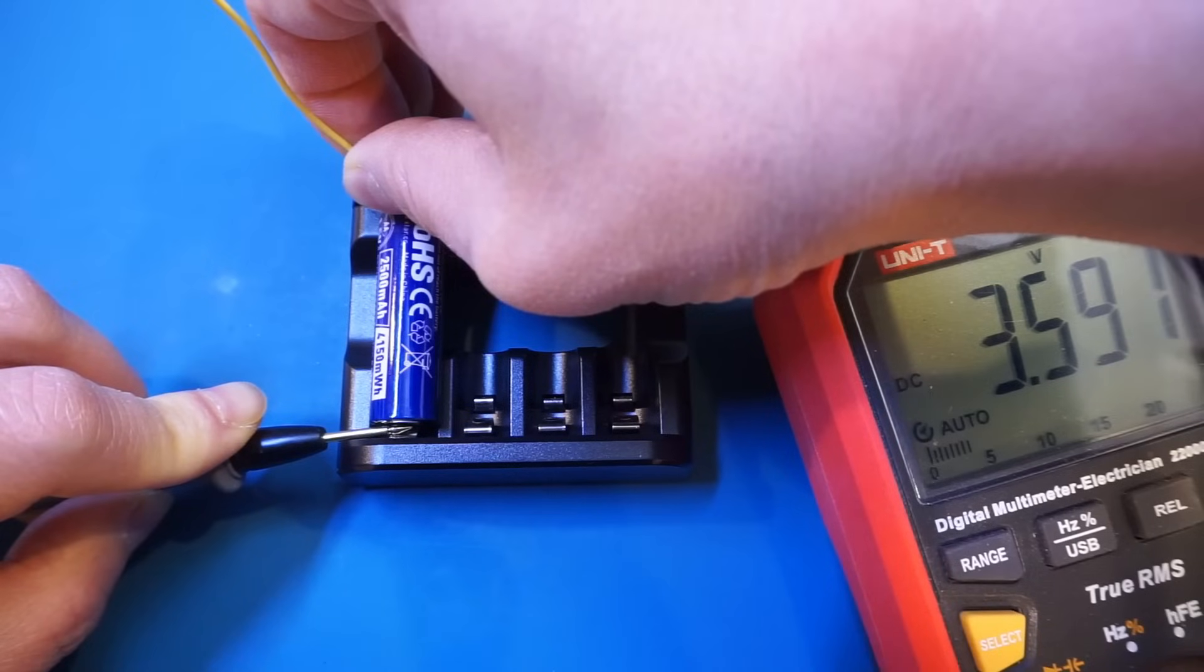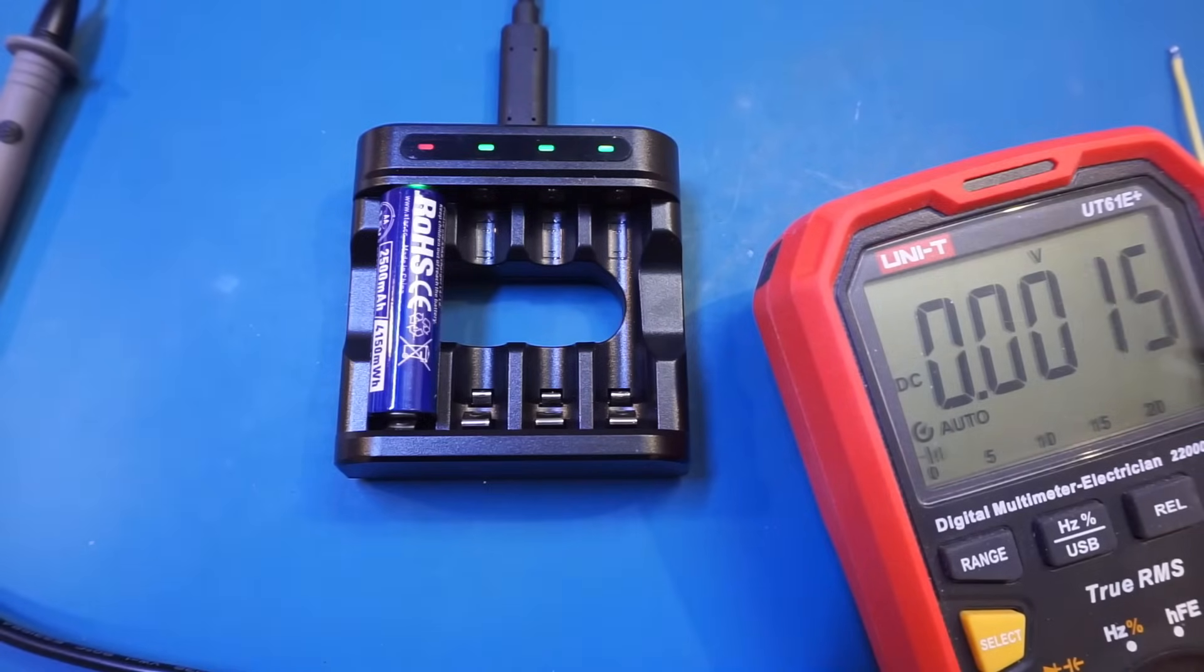And you can see right now we're at 3.5V. So clearly that is higher than the voltage of the battery. So clearly the charger operates at a much higher voltage.